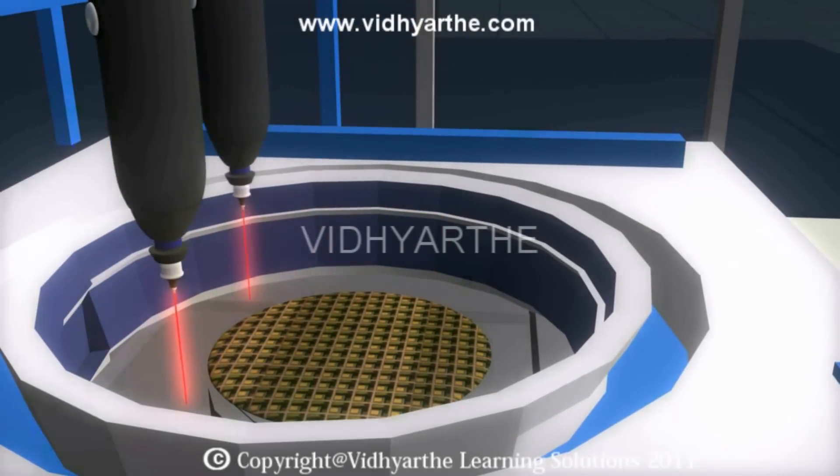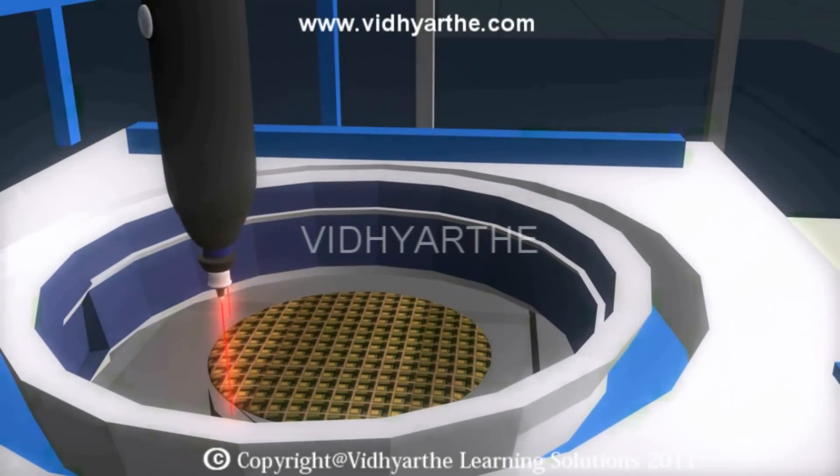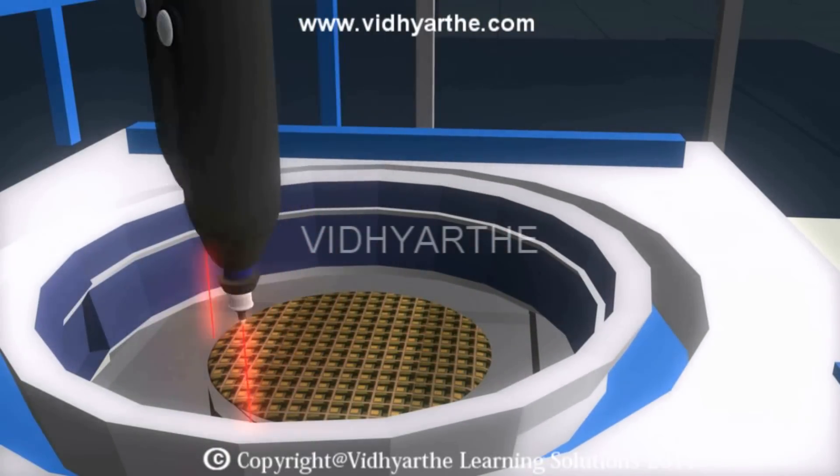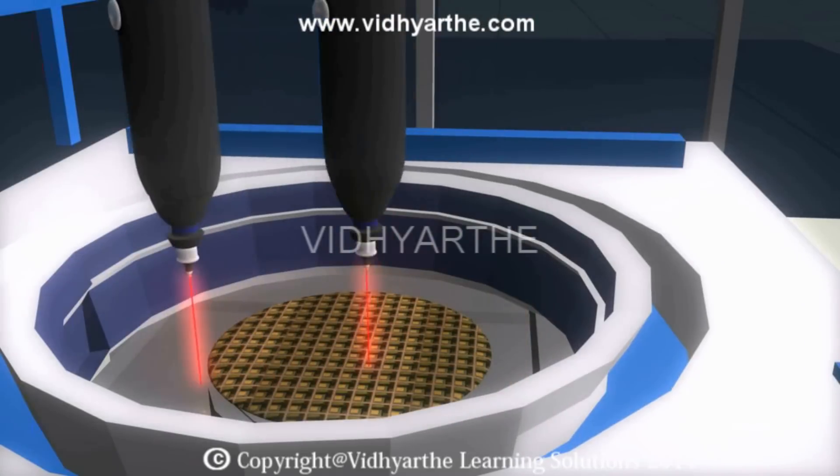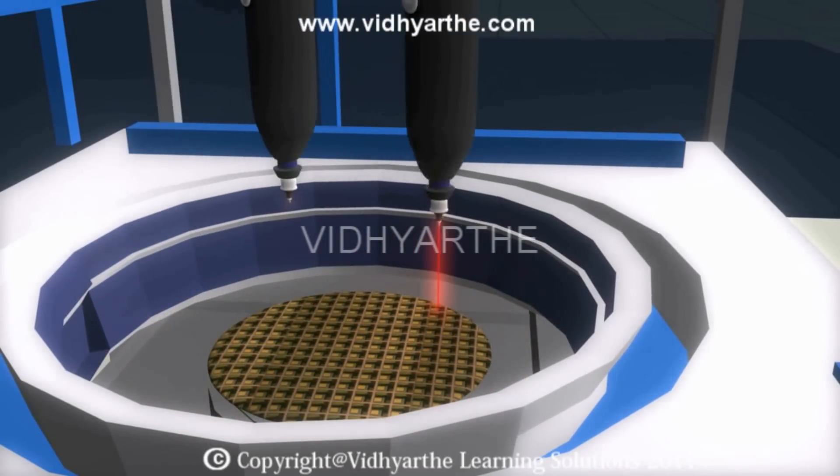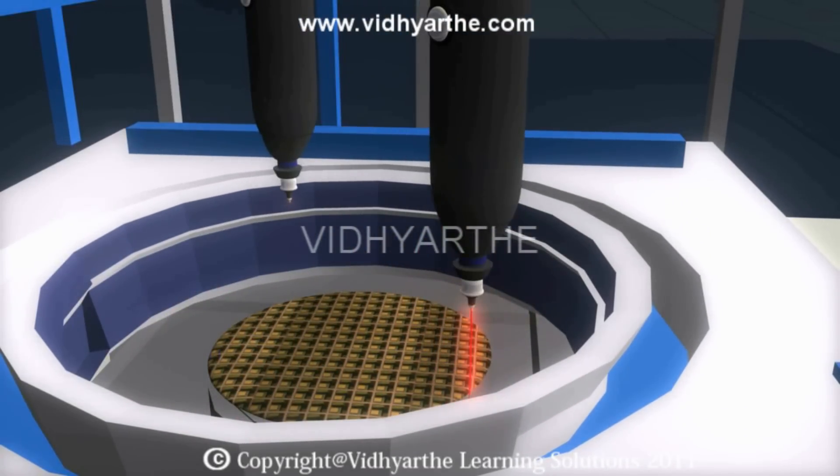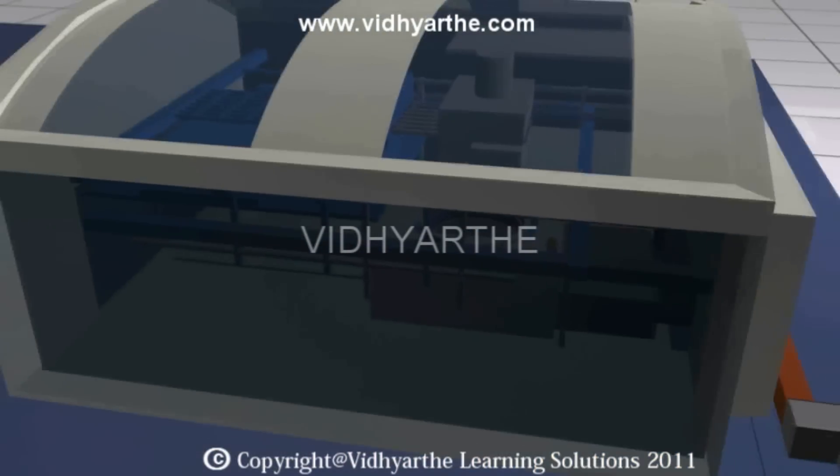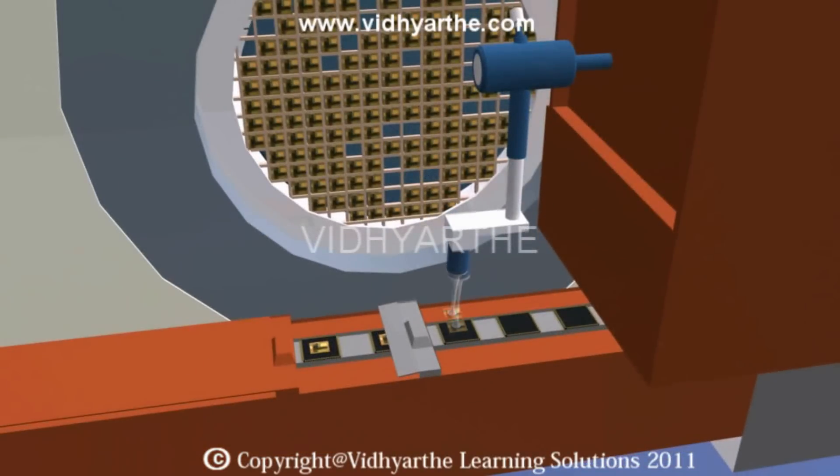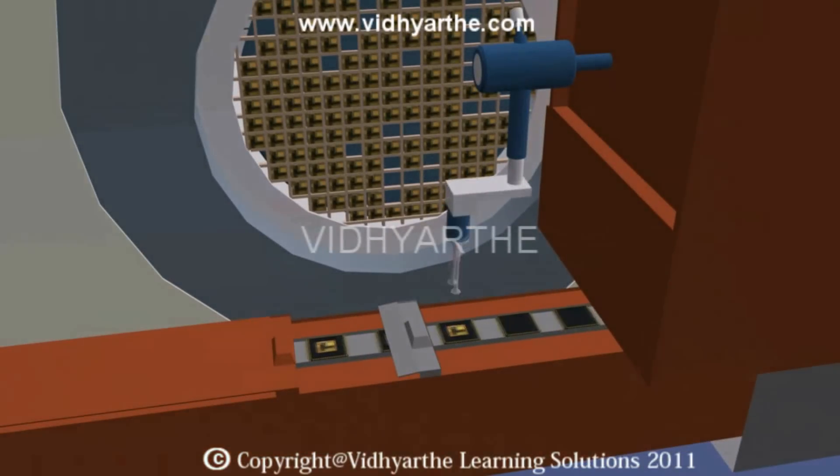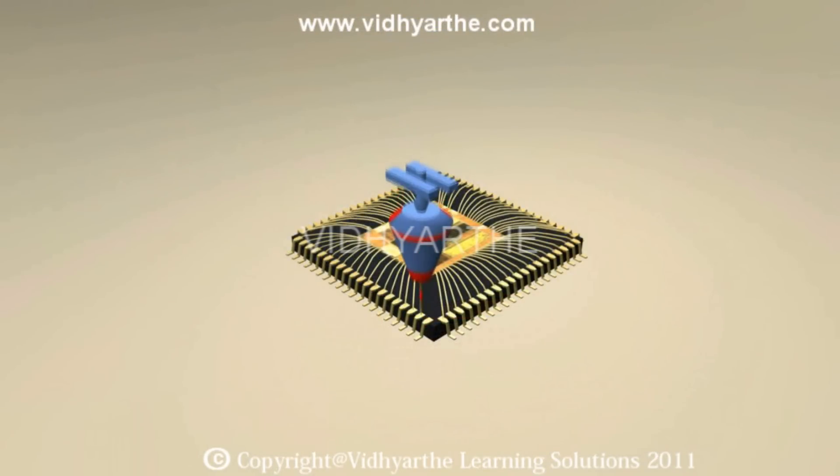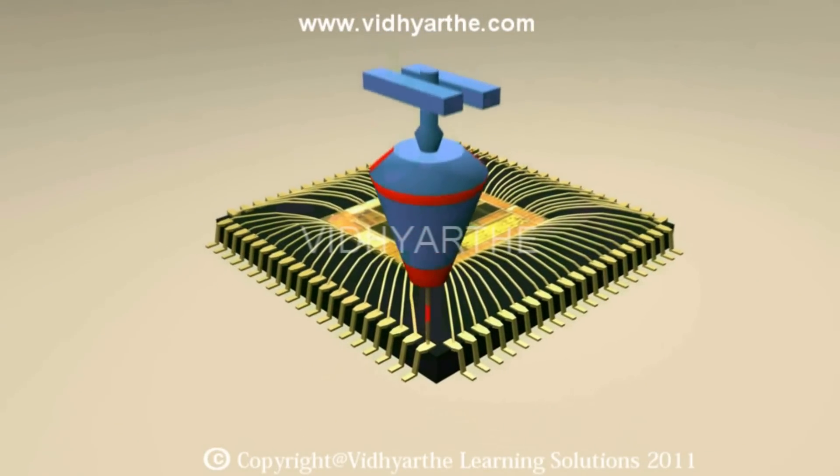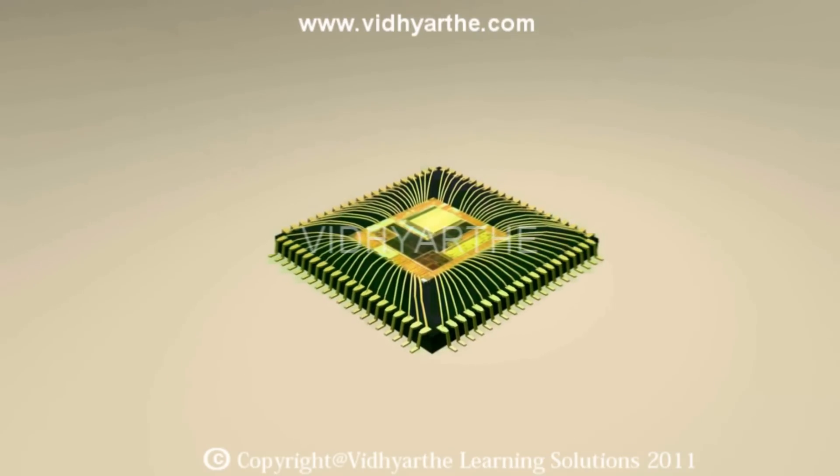The wafer is then sliced into multiple chips and sent to the packaging unit. Each integrated circuit is placed in protective bases, bonded and packaged based on the packaging requirement.